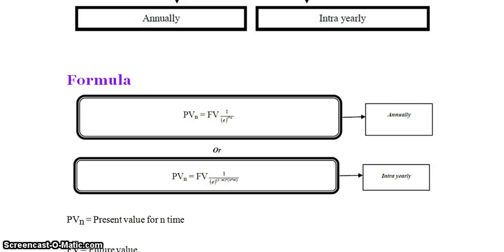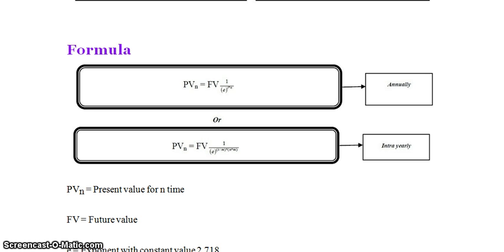Let us now understand the formulas. The formula for annual continuous discounting is: Present Value of n = Future Value × (1 / e^(i×n)). For intra-yearly continuous discounting: Present Value of n = Future Value × (1 / e^((i/m)×(n×m))). This second formula is for intra-yearly compounding.